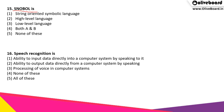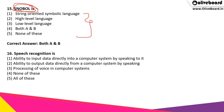Snowball is what? Out of the following options, what does Snowball indicate? The correct answer is option 4, that is both A and B, meaning it is a string oriented symbolic language which is a very high level language.